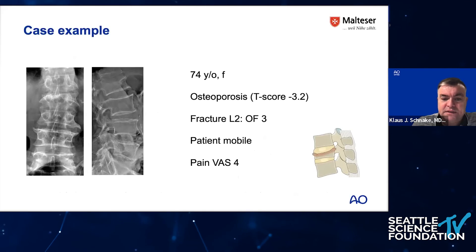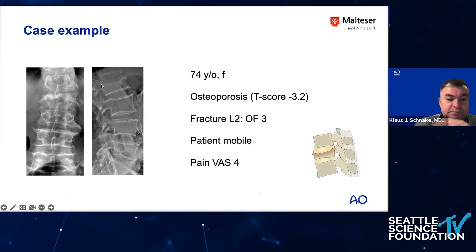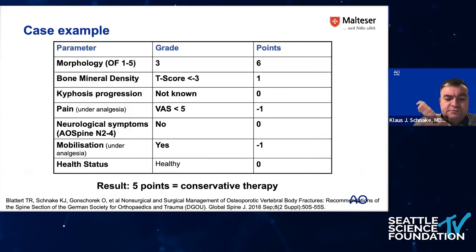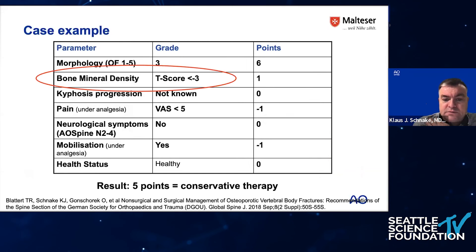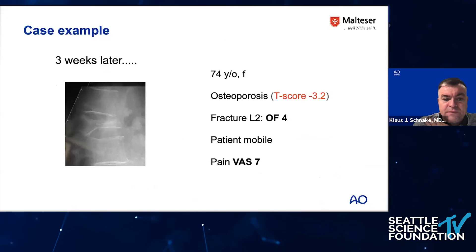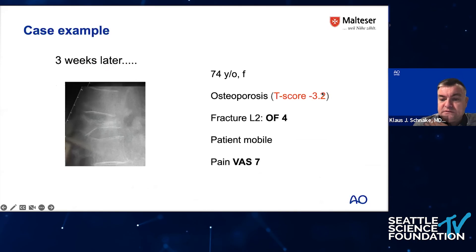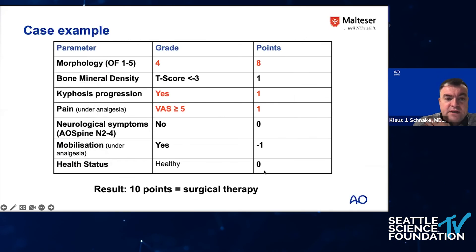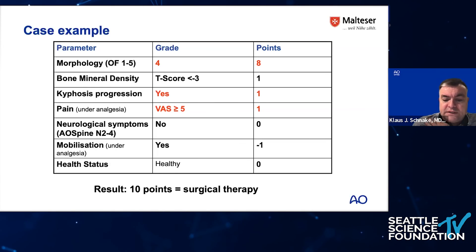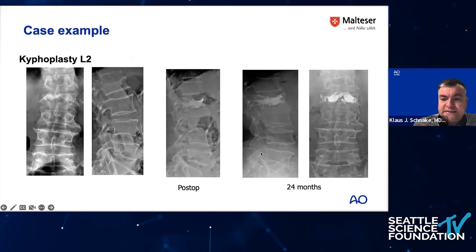A case example: a 74-year-old female with severe osteoporosis and an L2 fracture classified as OF3 — one end plate deformation plus posterior wall involvement. The patient was mobile with relatively low pain, so we decided to treat conservatively, despite already noting a relatively low T-score. Conservative treatment failed three weeks later — it now looked like an OF4, with both end plates involved, mainly attributed to the low T-score. The patient remained mobile but had severe pain. Using our scoring system, we then decided on surgical treatment and performed augmentation, which worked quite well over two years.